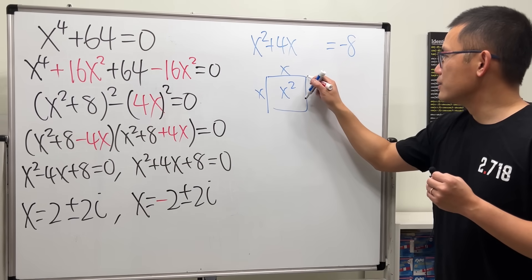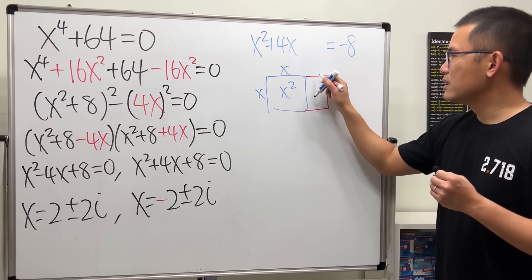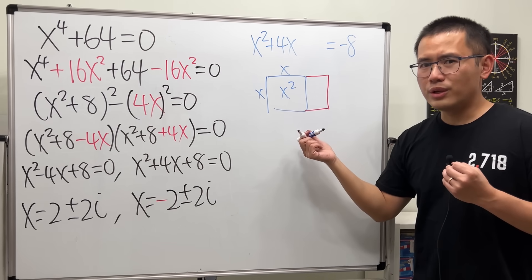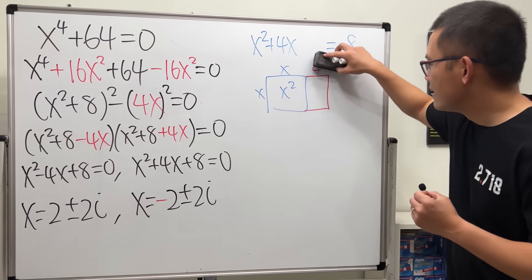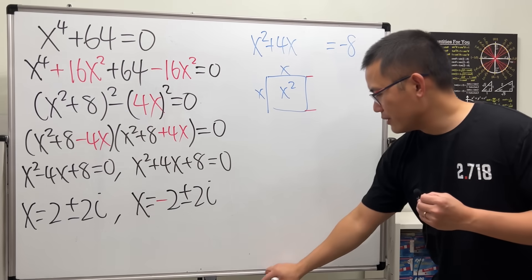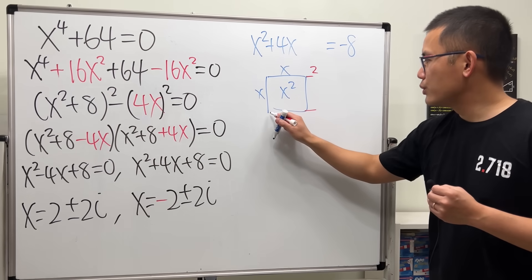You are going to just get a rectangle. No. Do not just say 4, right? Cut this into half of it. So, you get 2 right here and then 2 right here.